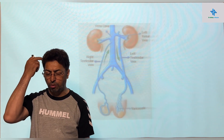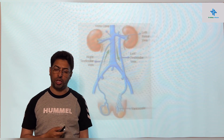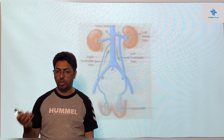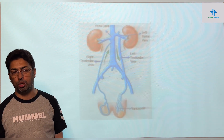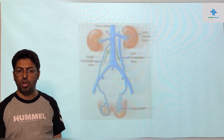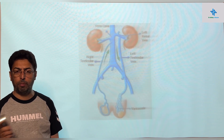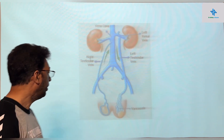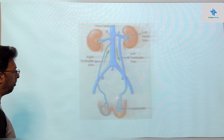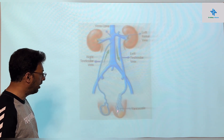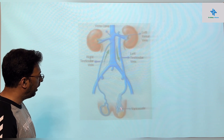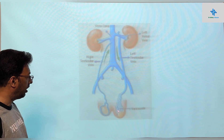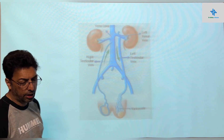As far as lymphatic drainage of the testes is concerned, you have to remember the pre-aortic and para-aortic groups of lymph nodes — one in front of the aorta and the other on the side of the aorta. These represent the lymphatic drainage of the testes, and similarly for the ovaries. Additionally, when the veins on the testes and the pampiniform plexus are dilated, this gives the clinical condition known as varicocele.